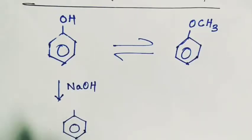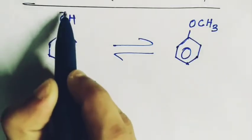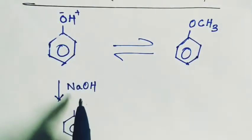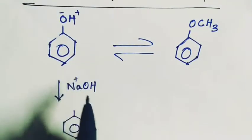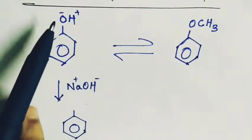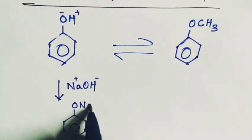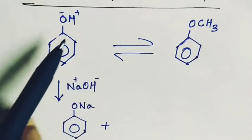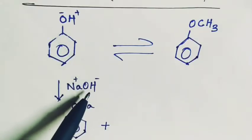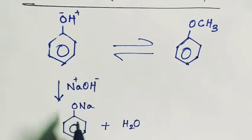Benzene ring here, see oxygen is minus, H is plus, and in NaOH, Na is plus, OH is minus. So this minus will attract the plus one, so here it will form O Na+ and the H+ will attract this OH- ion, so it will form H2O. This compound is known as sodium phenoxide.